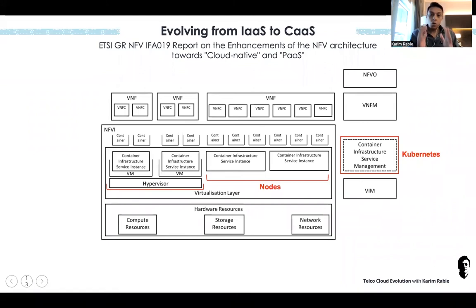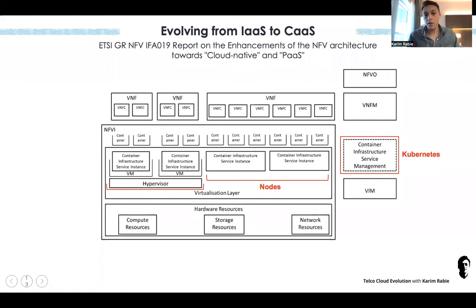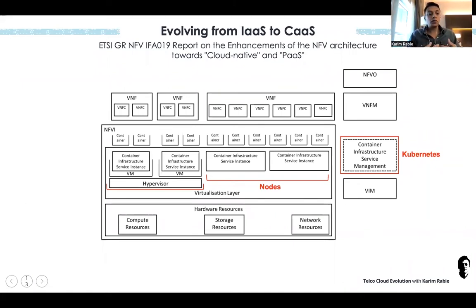By that time, the majority of CNF vendors or 5G core vendors said they were going to adopt containers for their solutions — all 5G core functions like UPF, AMF, and SMF would be containerized. Till that time, ETSI NFV was a little bit late and hadn't shown us a framework for how to embrace such technology.